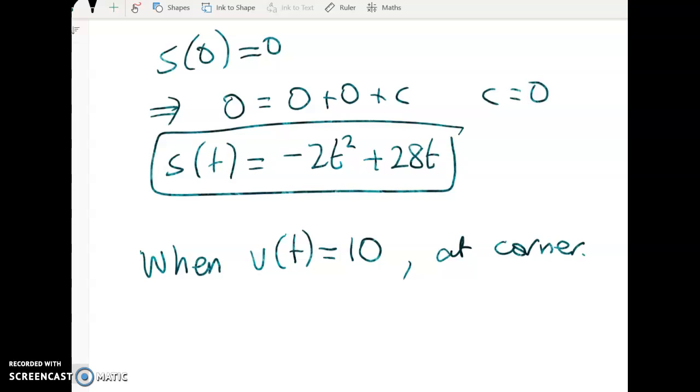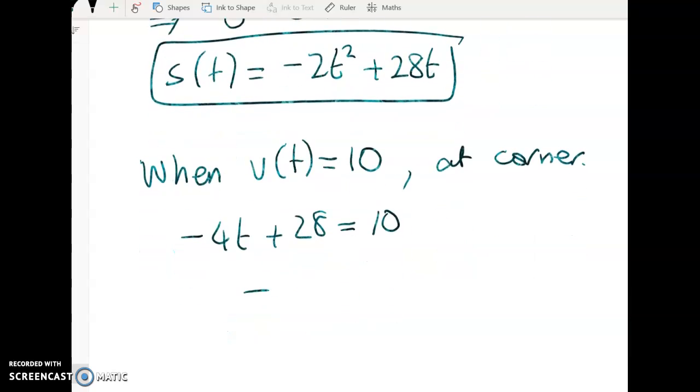So let's solve that. Well, we've got negative 4T plus 28 is equal to 10, giving us negative 4T is equal to negative 18. T is equal to 9 over 2 or 4.5 seconds.